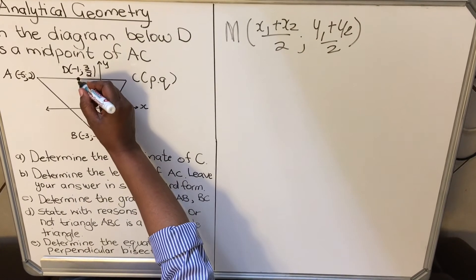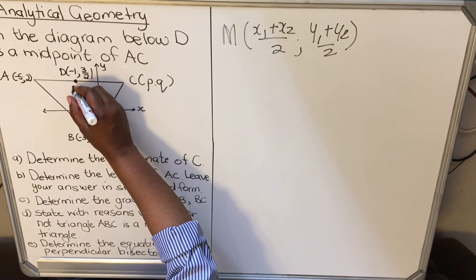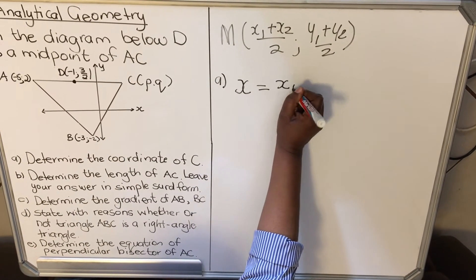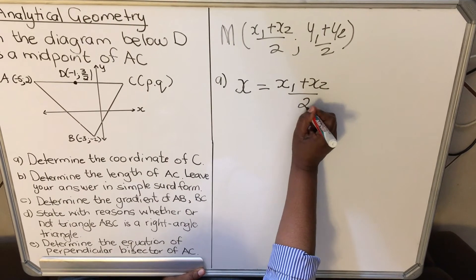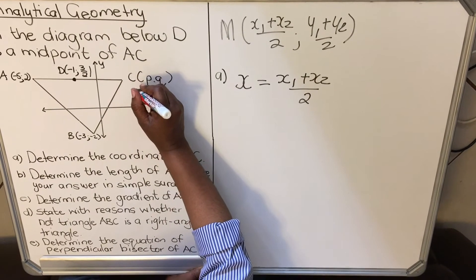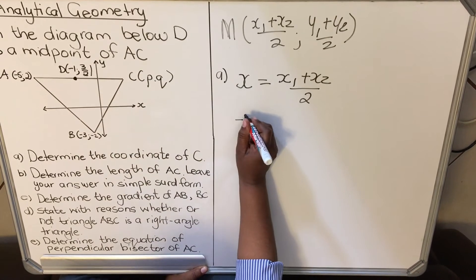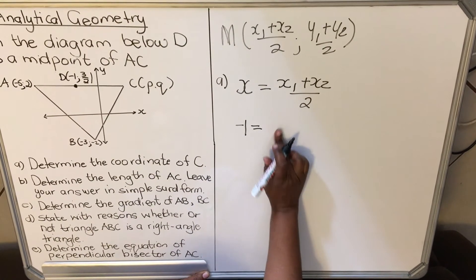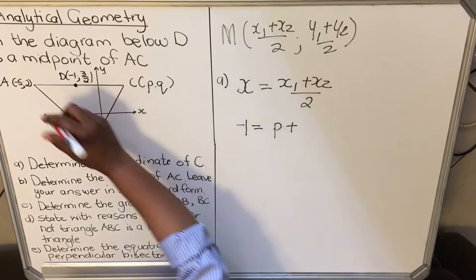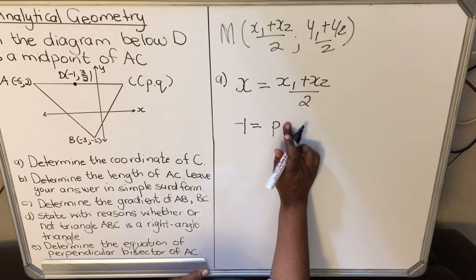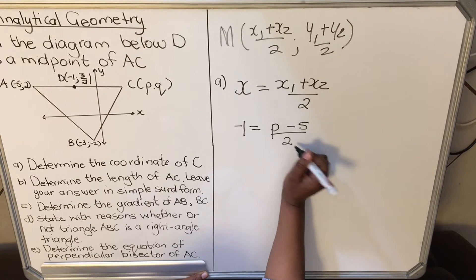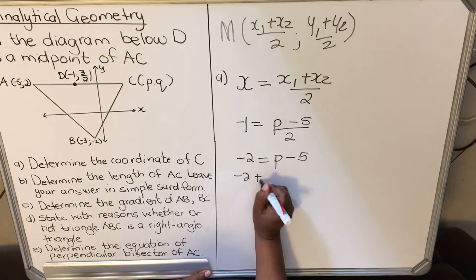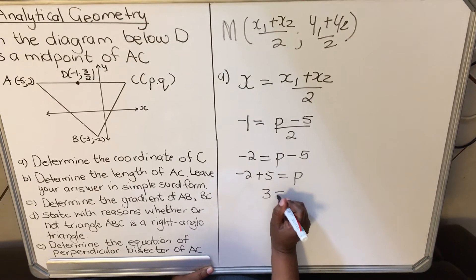When you are given the midpoint, you write it as: x of midpoint = (x1 + x2)/2. Our midpoint x-coordinate is -1. So: -1 = (x_C + (-5)) / 2. Multiply both sides by 2: -2 = x_C - 5. Take -5 to the other side, so x_C = 3.